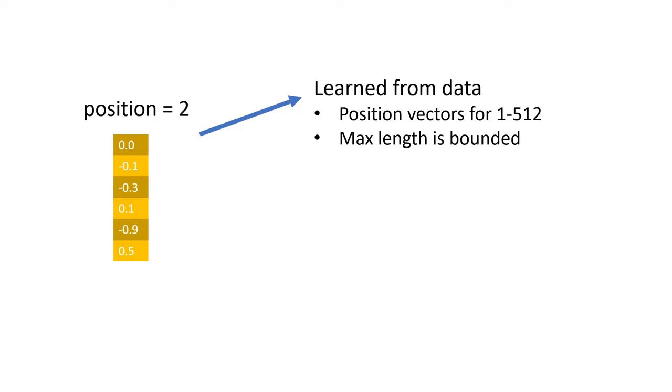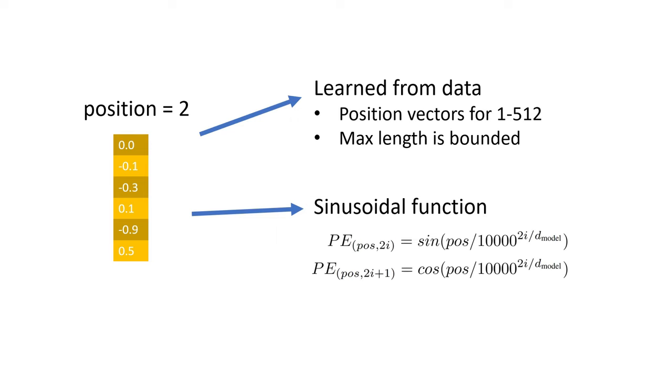The second method of deriving Positional Embeddings is using a sinusoidal function that looks something like this. The details of how this is constructed don't matter too much. But basically, we are constructing a unique Positional Embedding for each possible position in the sequence. And the question of which one is better? Well, empirically, people have found that these two methods of learning them from data and constructing them from sinusoidal functions, they have similar performance when used in real models.